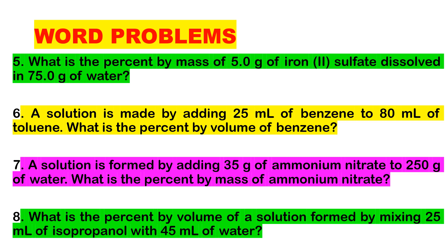Number seven: a solution is formed by adding 35 grams of ammonium nitrate to 250 grams of water — what is the percent by mass of ammonium nitrate? Number eight: what is the percent by volume of a solution formed by mixing 25 ml of isopropanol with 45 ml of water?